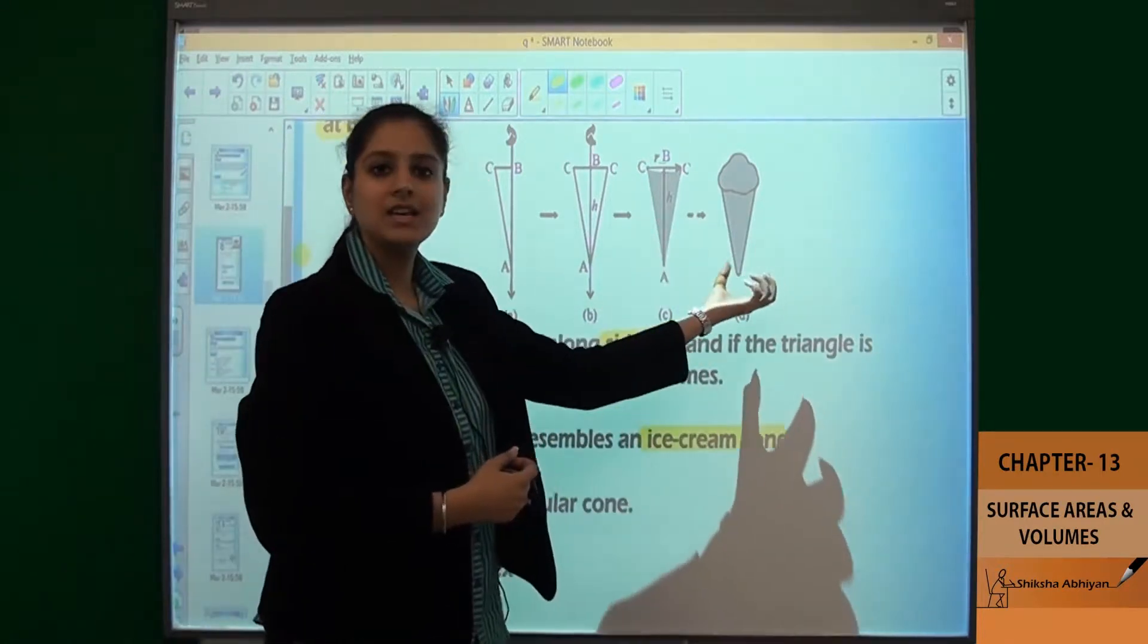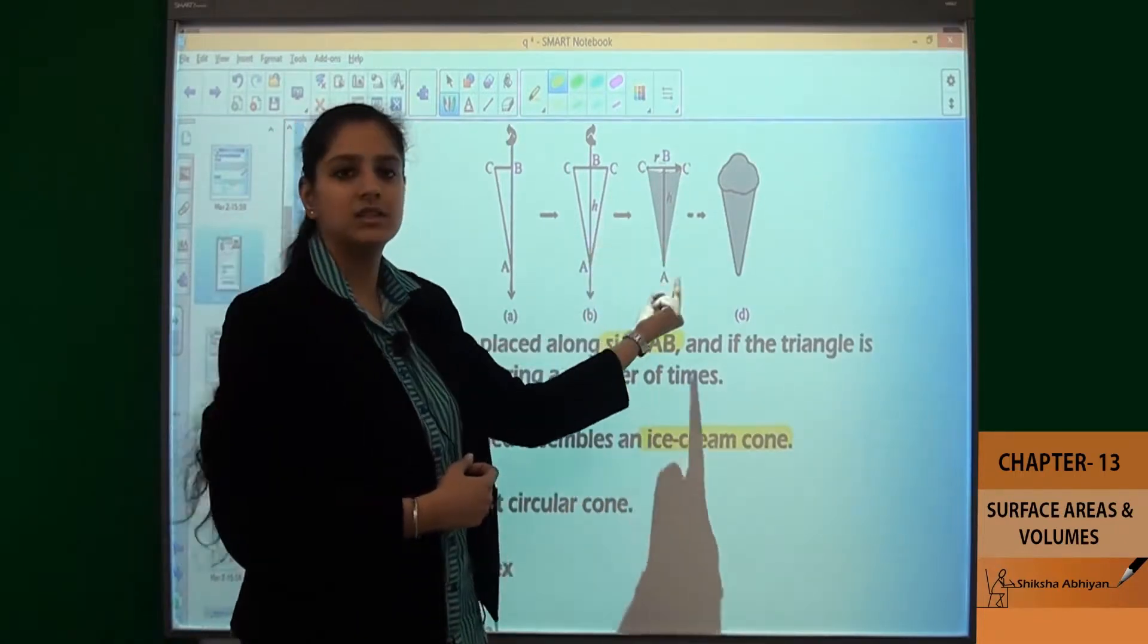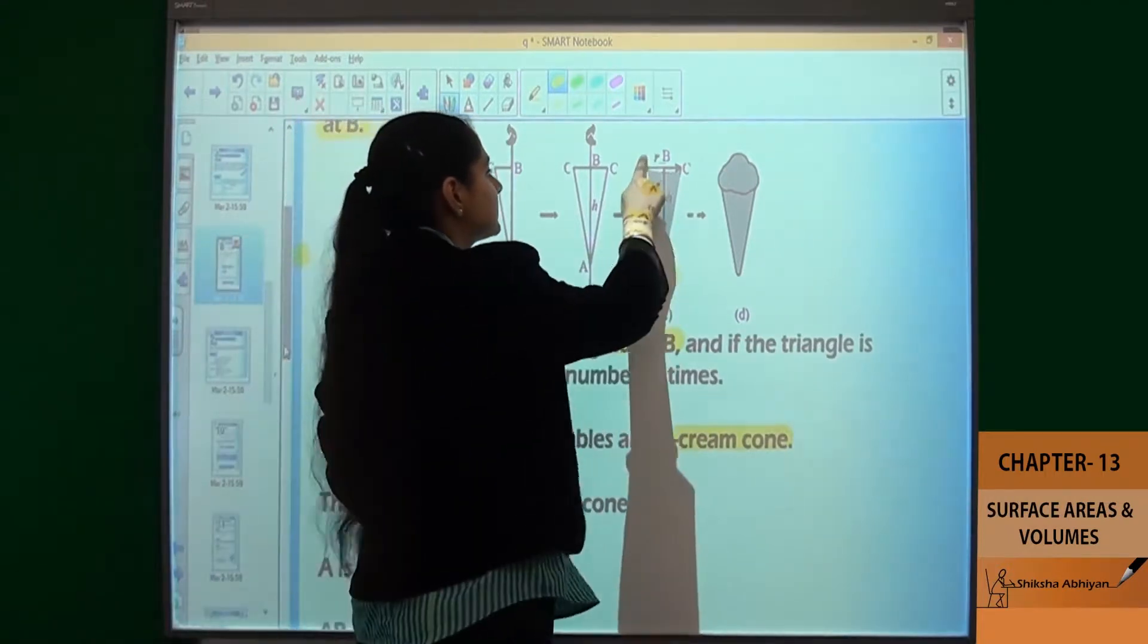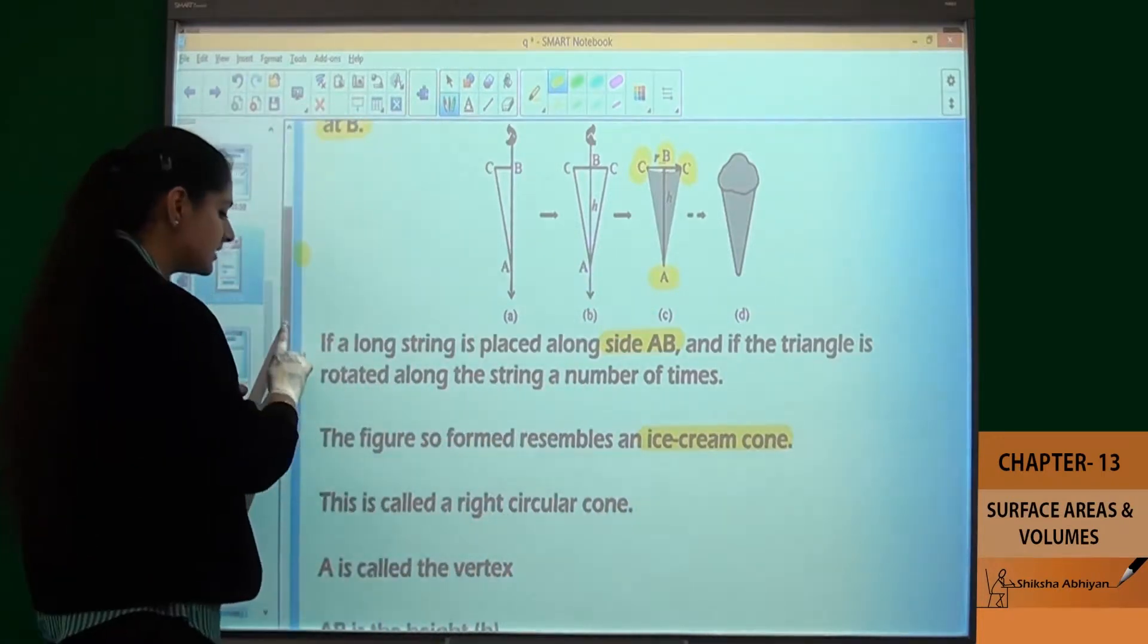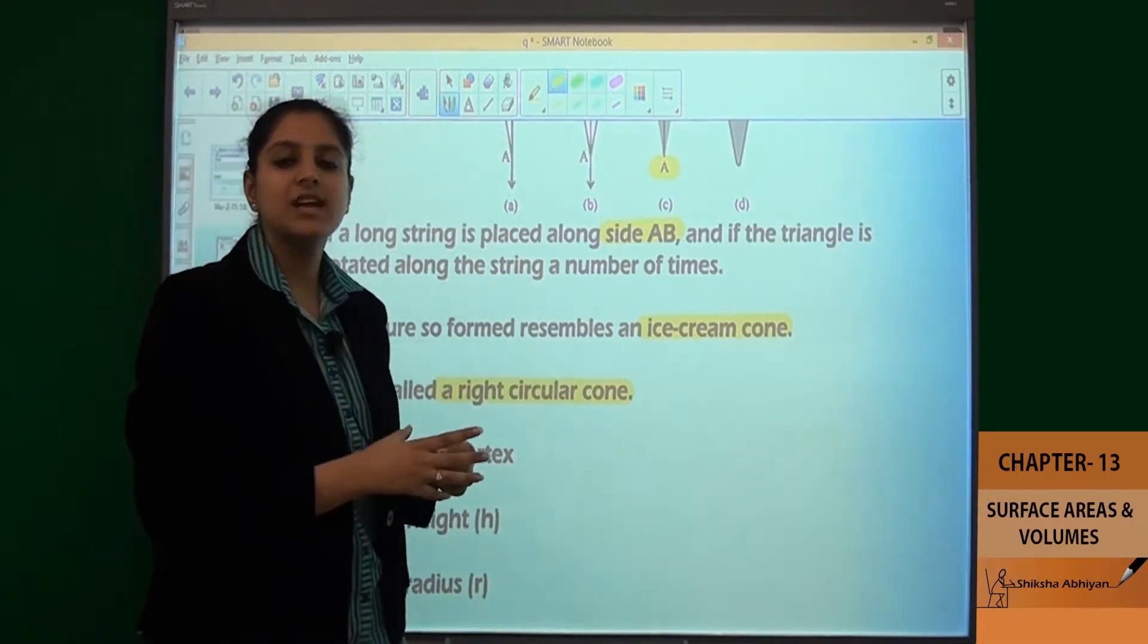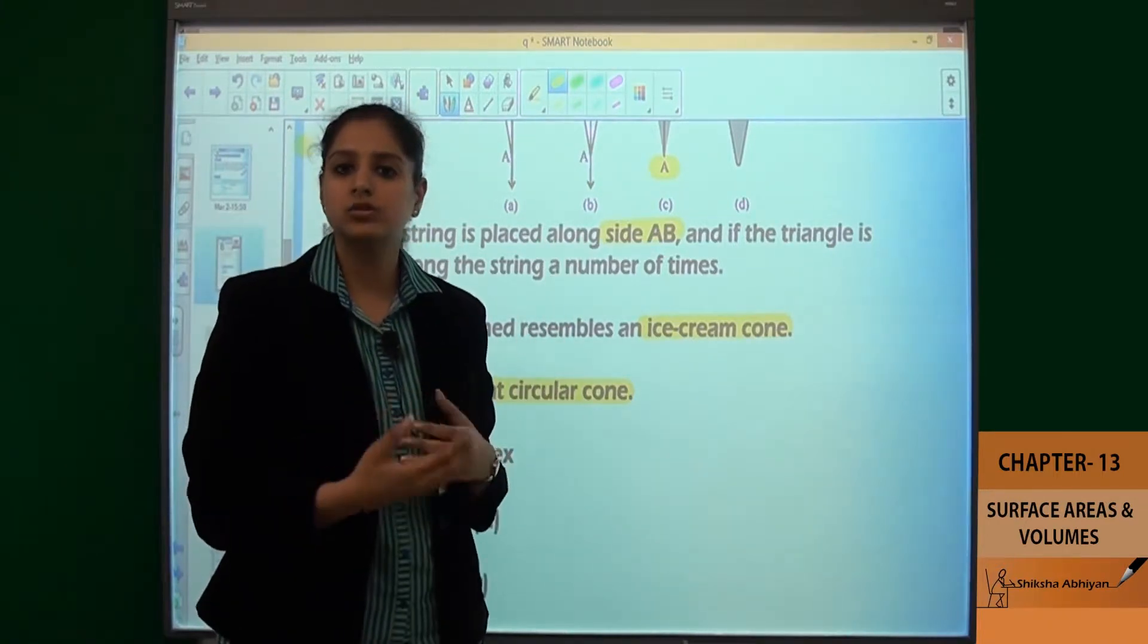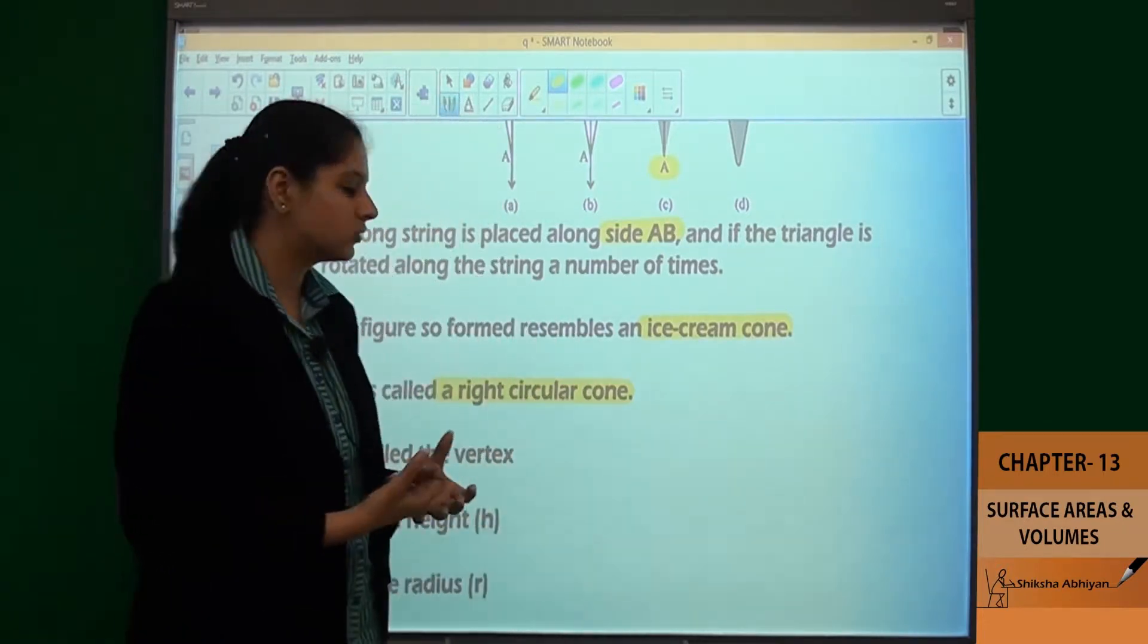Now this ice cream cone has an application. In mathematics, it looks like this - this is a cone shape. Just as a right circular cylinder was vertical, similarly if we use a right angle triangle to form a cone, then it is called a right circular cone.